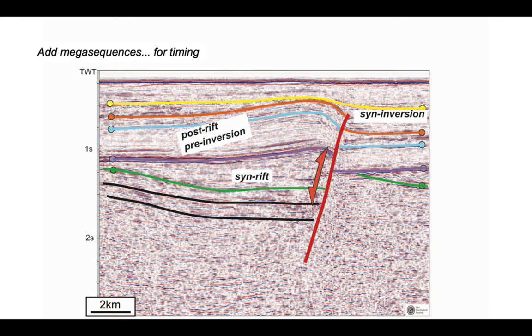This contractional deformation is recorded by the interval between the yellow and the orange horizons, and perhaps even a bit shallower as well. Although the deformation is presumably over by the time we reach the modern seabed. Those youngest strata there are horizontal and seal the structure. The deformation is no longer active.